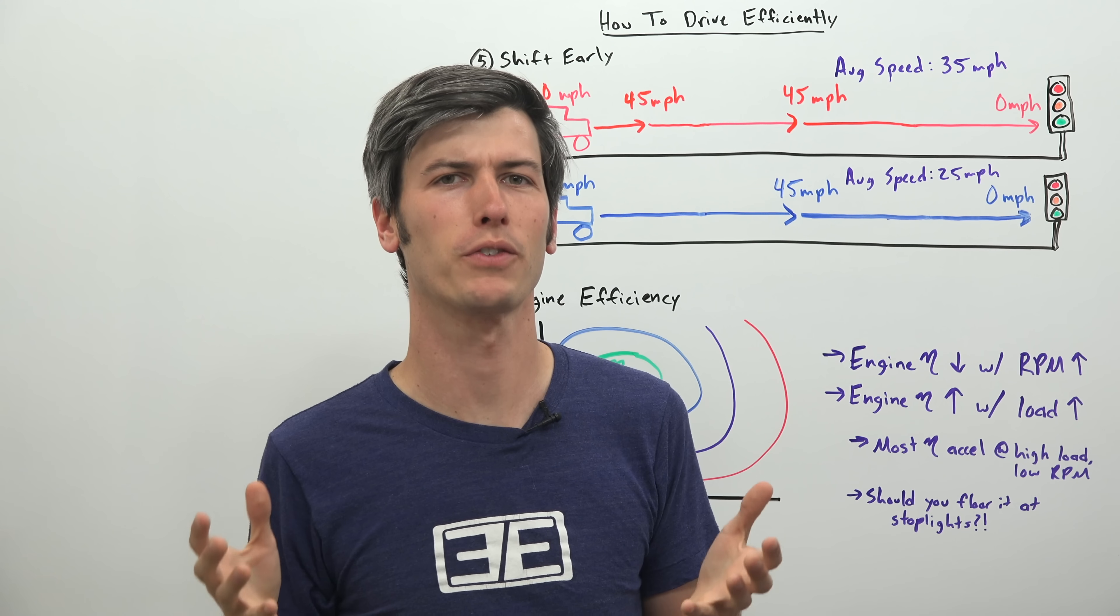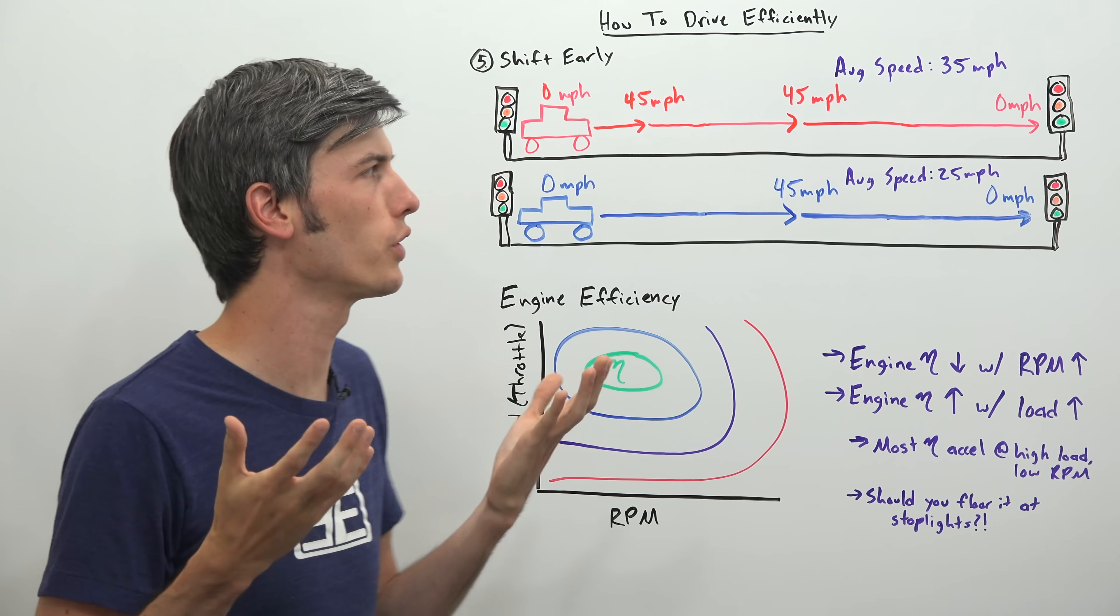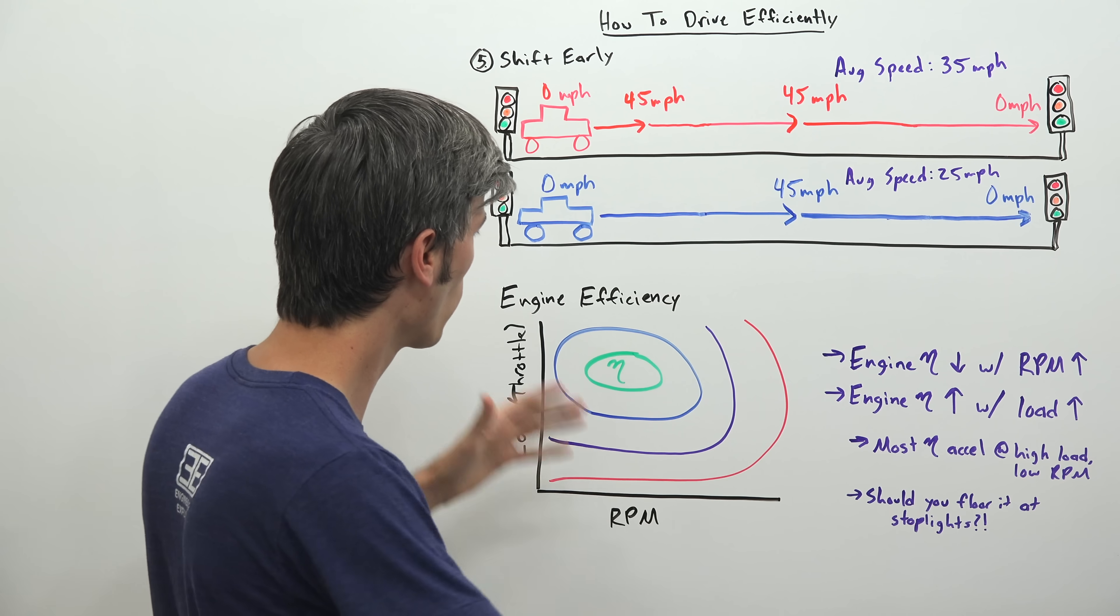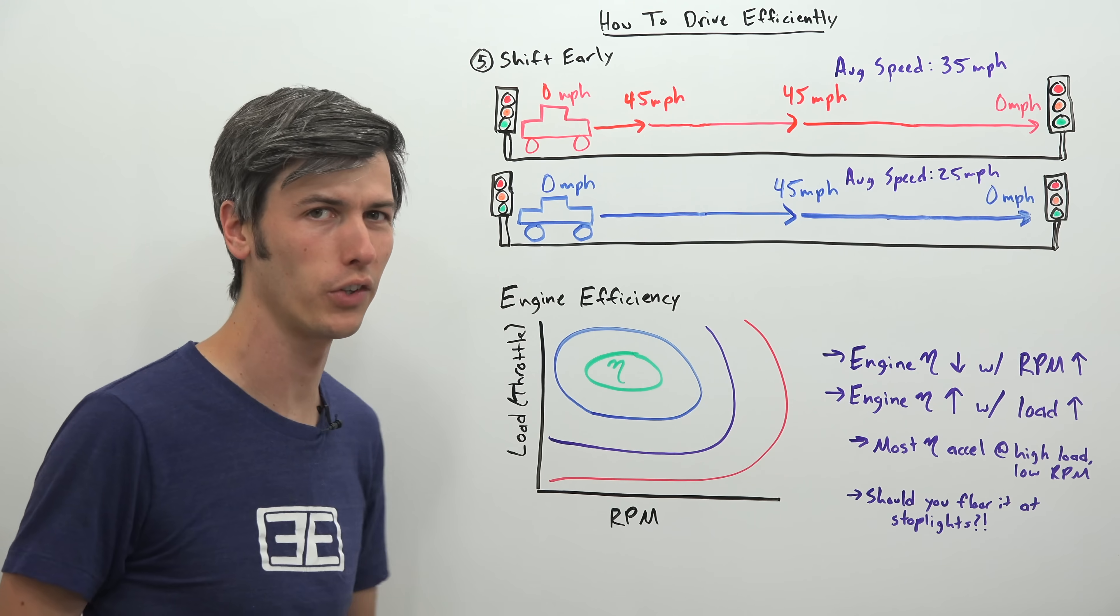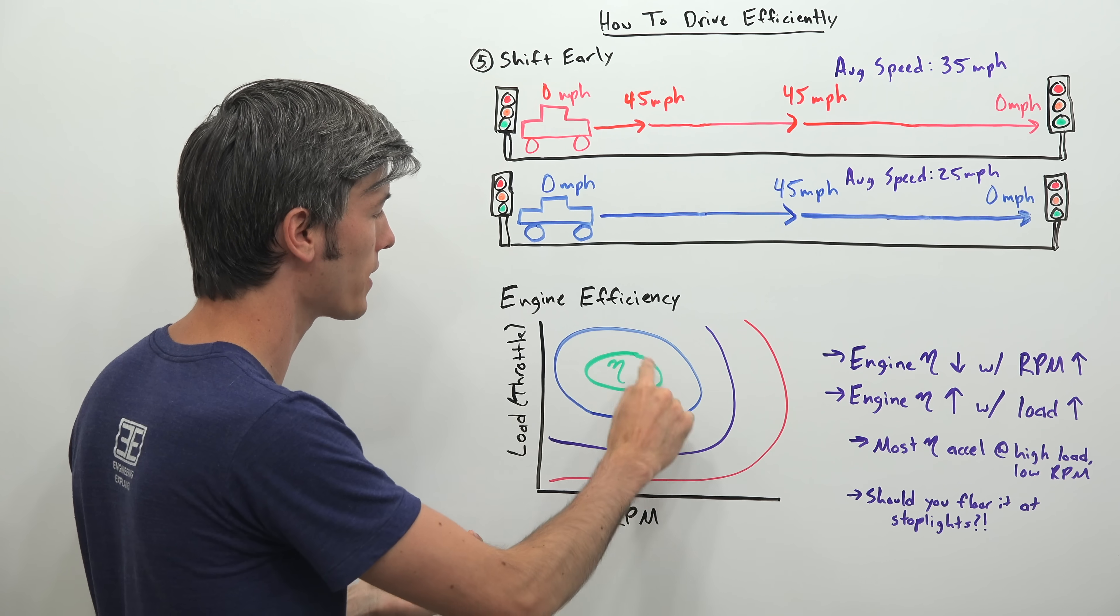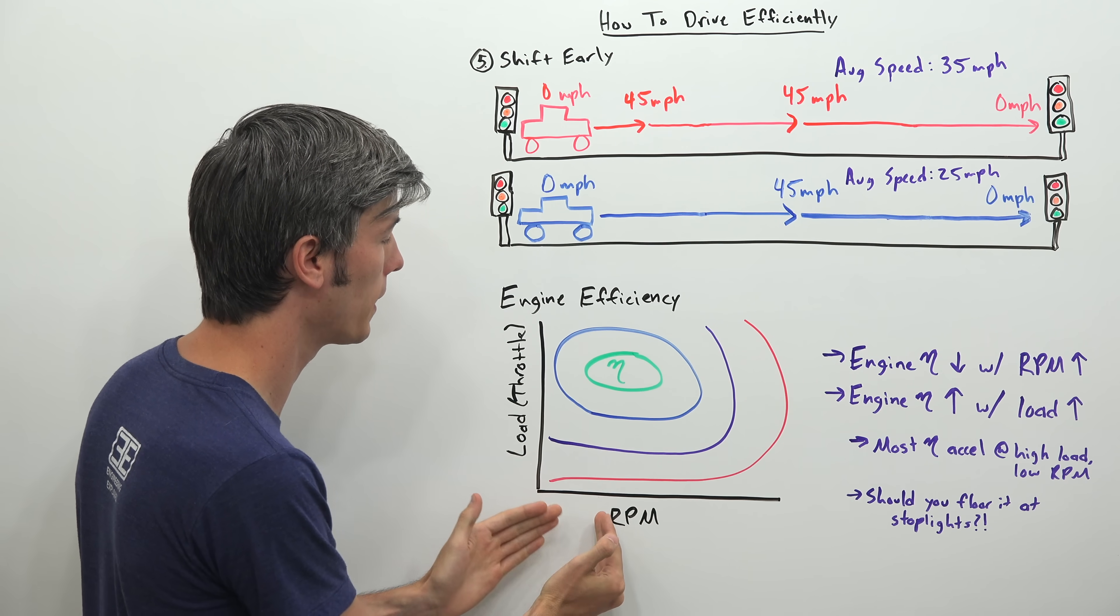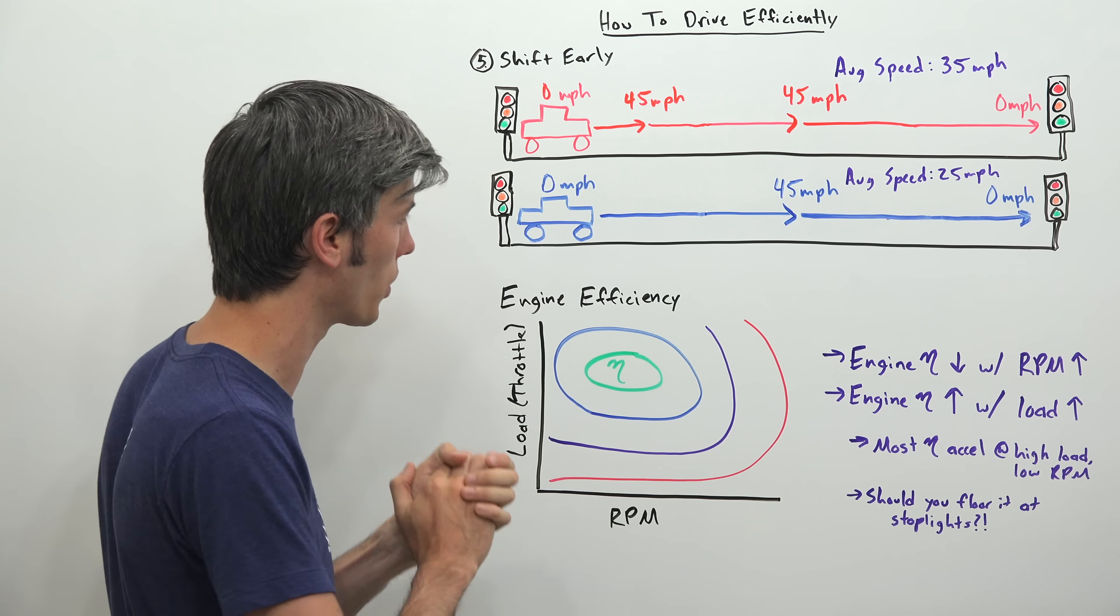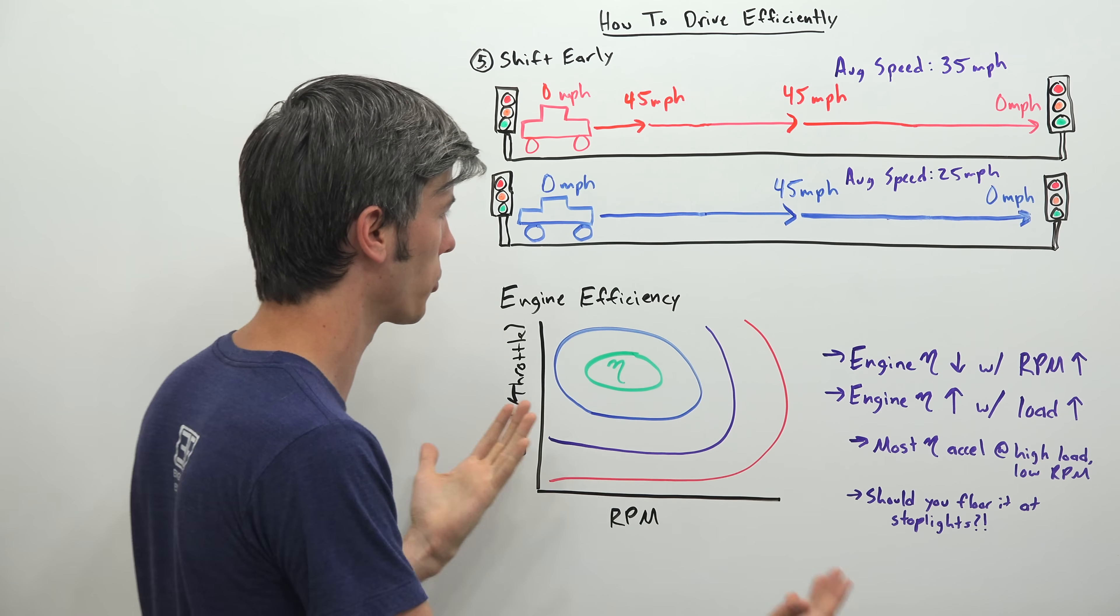Now our final point is to shift gears early. And generally you want to use light acceleration while doing so. So how do we know this? Well, if we look at an engine efficiency curve. Most internal combustion engines tend to operate at their highest efficiency at a low RPM and a relatively high load. Load meaning how much throttle are you applying. So the two rules we get here.